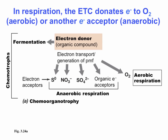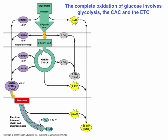Here is an example of respiration. A chemoorganotroph uses an electron donor, which is an organic molecule — think glucose. The electrons harvested in the form of NADH or FADH₂ eventually get given to oxygen to reduce it — that is aerobic respiration. However, you can have another electron acceptor: an organic molecule, sulfate, nitrate, or sulfur — those are molecules that can also receive electrons, and that would be considered anaerobic respiration.